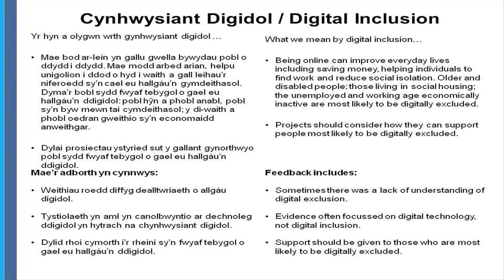On digital inclusion: being online can improve everyday lives by saving money, helping individuals find work and reducing social isolation. Older people, disabled people, those in social housing, unemployed and economically inactive people are most likely to be digitally excluded. Projects should consider how they can support those most likely to be digitally excluded. Some applicants focused on purchasing IT equipment without really focusing on how they might support those who are digitally excluded to become included.